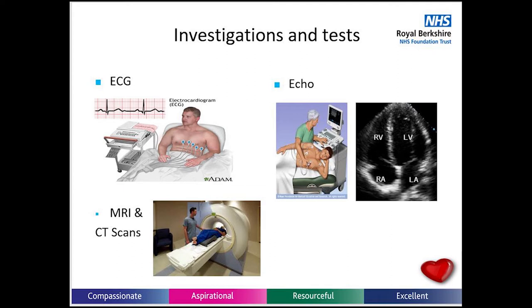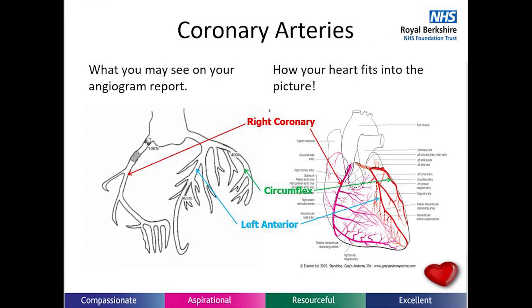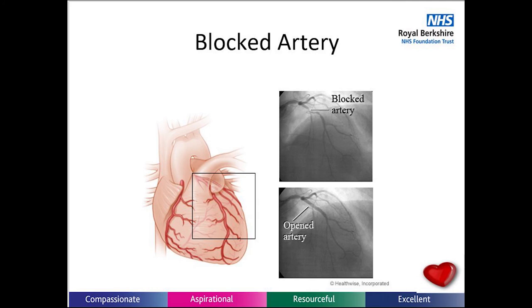Other tests can include a CT scan, cardiac MRI, and exercise testing. Angiograms can help with diagnosis of heart disease and valve disease. An angiogram is a test where dye is inserted via a catheter, usually in the wrist, and it visualises the coronary arteries so problems within the coronary circulation can be identified. Angiogram reports show diagrammatical pictures of your heart and how the coronary arteries fit into that picture. If you have a narrowed or blocked artery, this may require a stent.